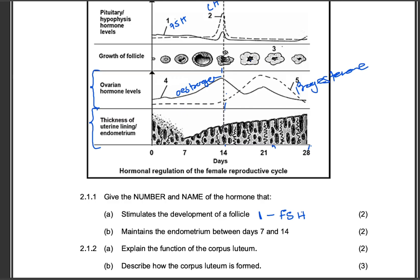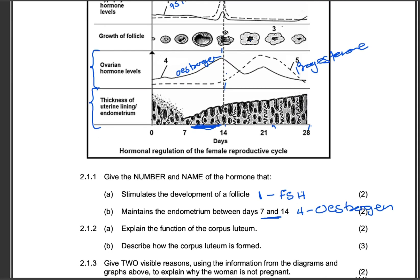Question 2.1.1b: Give the number and name of the hormone that maintains the endometrium between day 7 and day 14. That is the oestrogen hormone — we can see that oestrogen hormone levels increase from day 7 to day 14, increasing in the blood and causing the thickening of the endometrium.